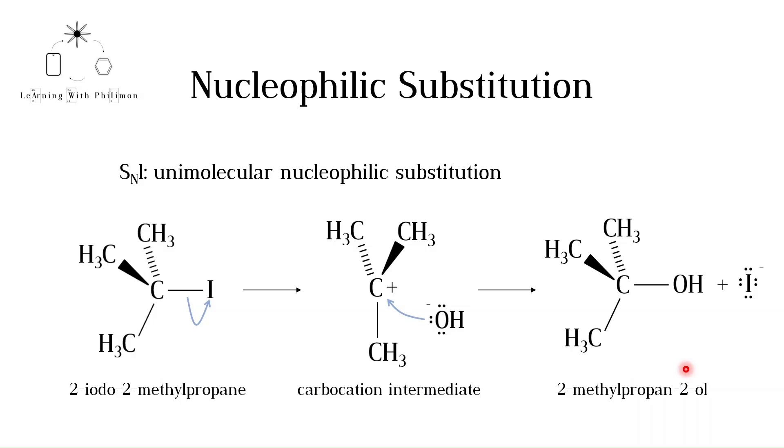Remember that in the SN2 mechanism there was an inversion in the stereochemistry. In the SN1 mechanism, as the nucleophile can attack from both sides of the carbocation, a racemic mixture is formed. Only one optical isomer is drawn in this mechanism. For more on this please watch the video on optical isomers.